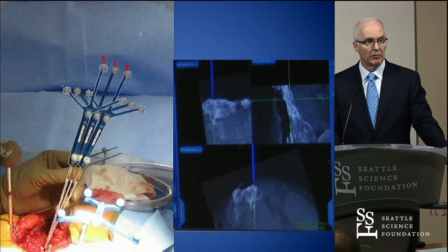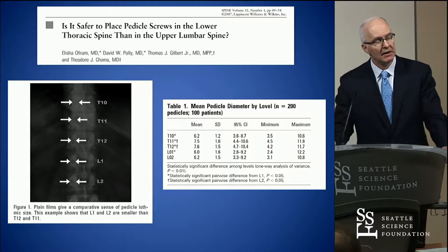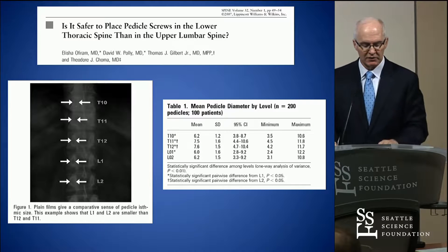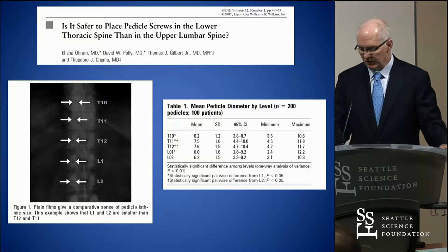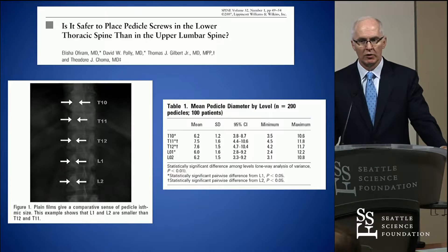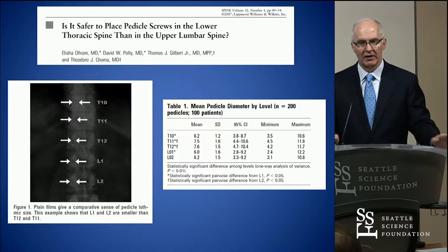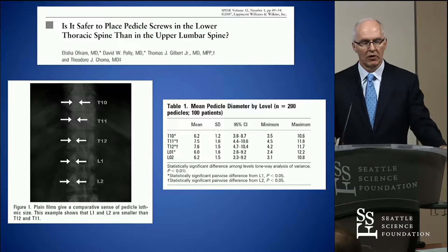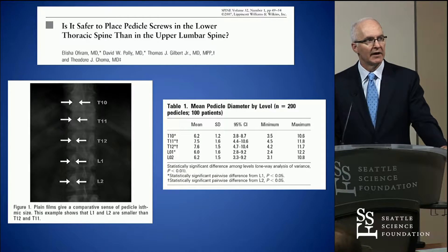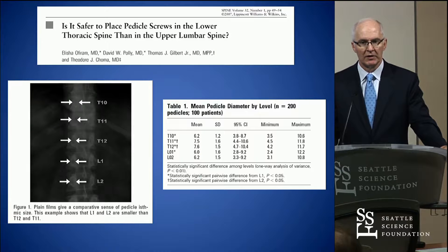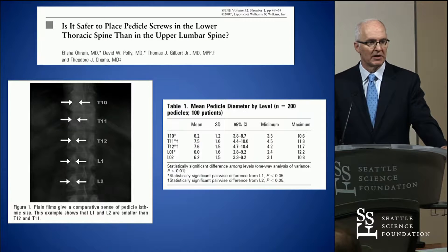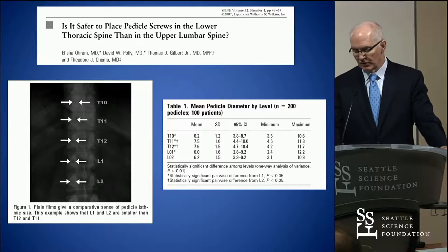Are you that good to do it without adjunctive technology? Some people are; most people aren't, and I would say I'm probably not. Where we got started on this is interesting. When we first started doing pedicle screws in the lumbar spine for scoliosis, I would do preoperative CT scans to see if the pedicles were big enough. It turns out that T12 is always bigger than L1, contrary to what many thought — that pedicles get bigger as you go more caudal. But it changes at the thoracolumbar junction.